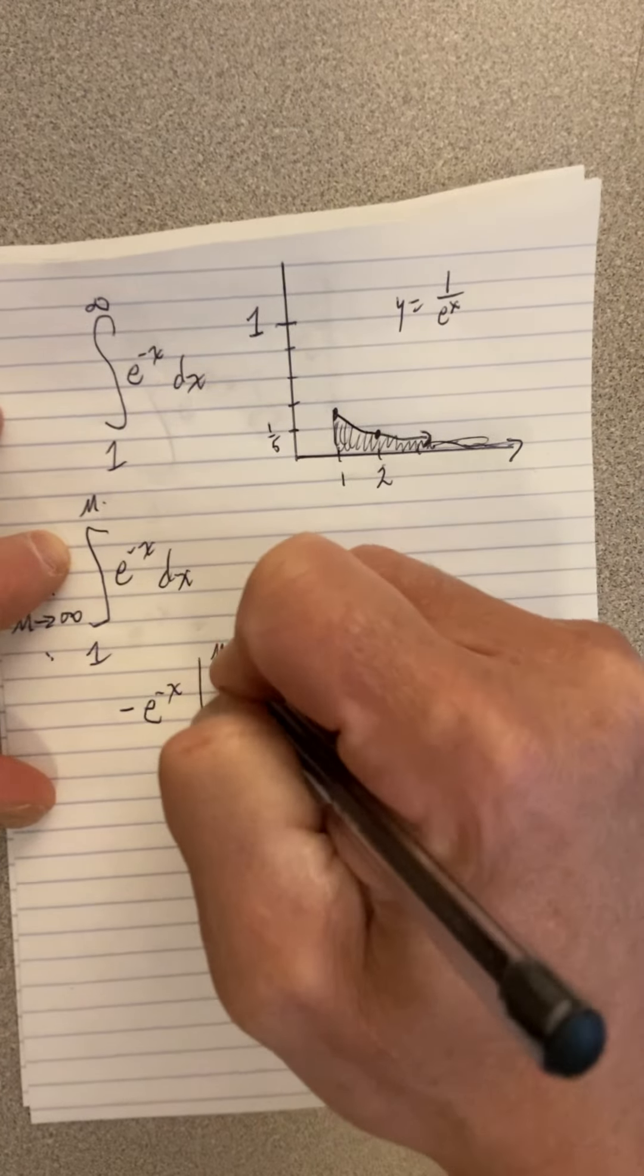And we're going from 1 to m. And so then we have negative e to the negative m minus a negative e to the negative 1. And remember all this time there's a limit out here. We're taking the limit.